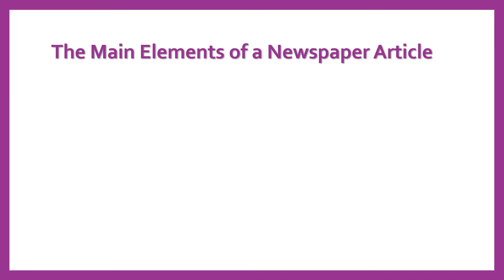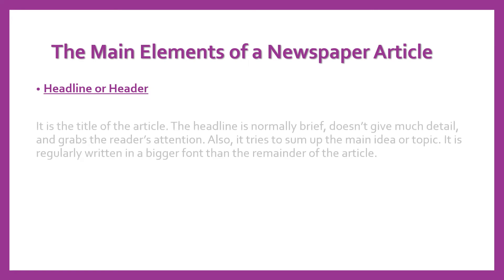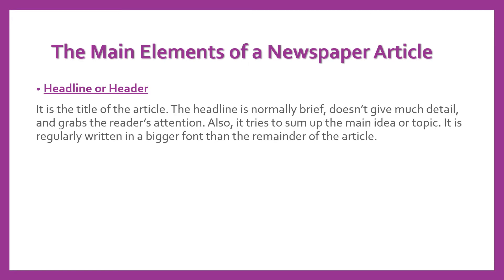Now we're going to see the main elements of a newspaper article. First we have the headline or header. It is the title of the article. The headline is normally brief, doesn't give much detail and grabs the reader's attention. Also, it tries to sum up the main idea or topic. It is regularly written in a bigger font than the remainder of the article.